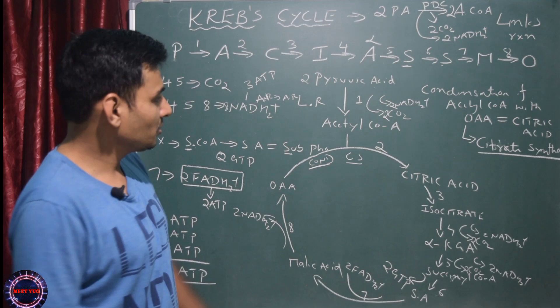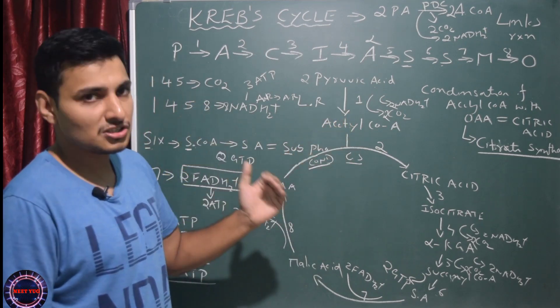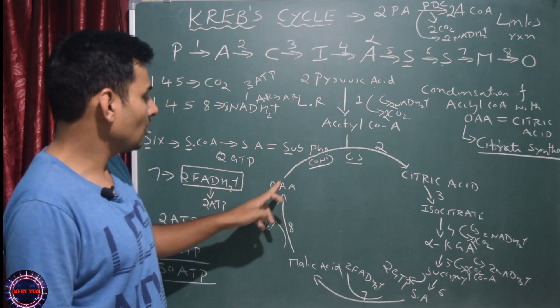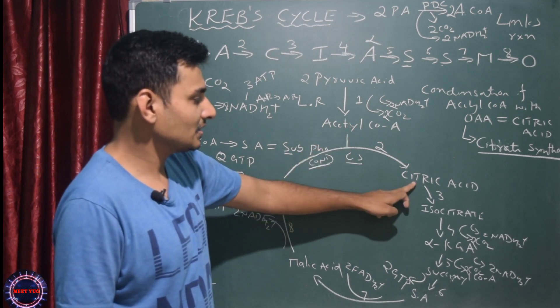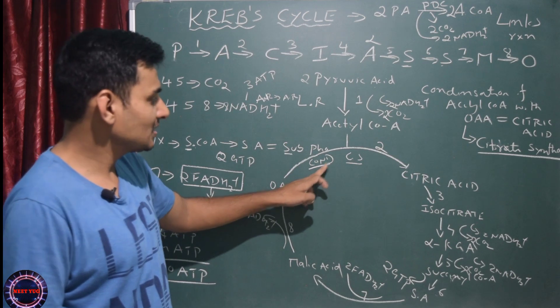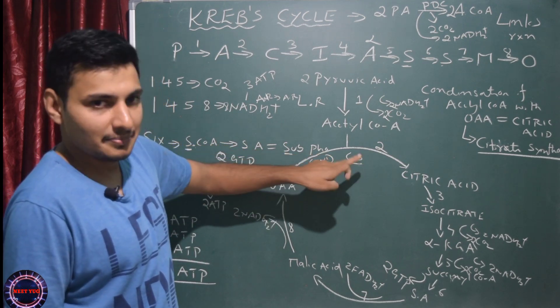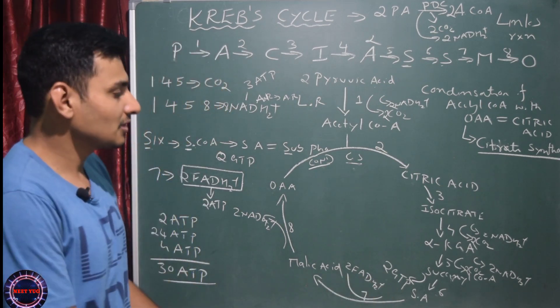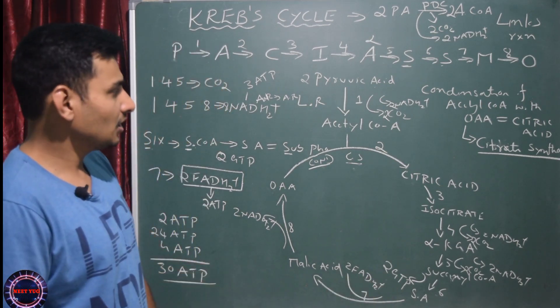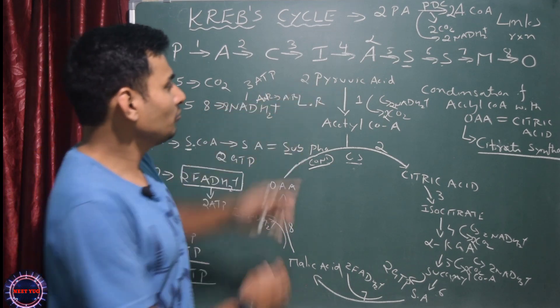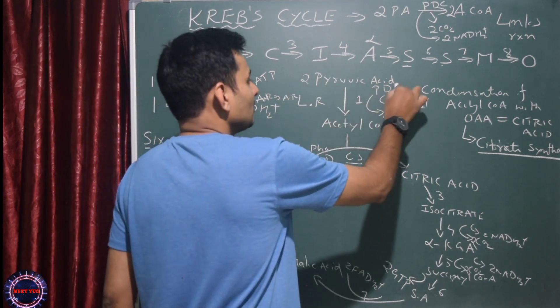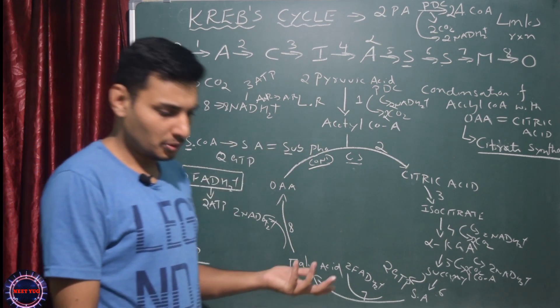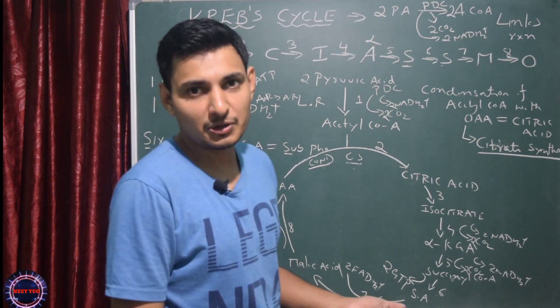That's all about Krebs cycle. Step number 1 is links reaction - links between anaerobic to aerobic respiration. Condensation is the first step of Krebs cycle: condensation of acetyl coenzyme A with oxaloacetic acid to yield citric acid, catalyzed by the enzyme citrate synthase. That's all. Hope this video is really helpful for you. Thank you very much.